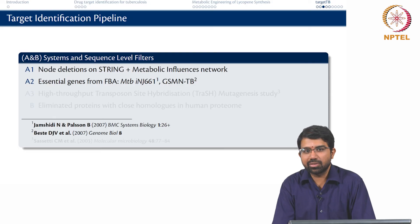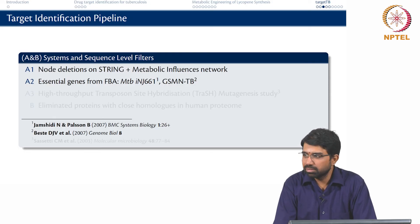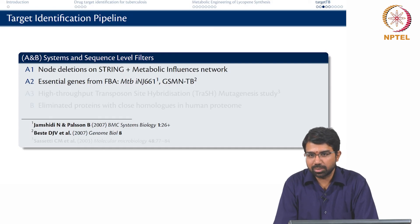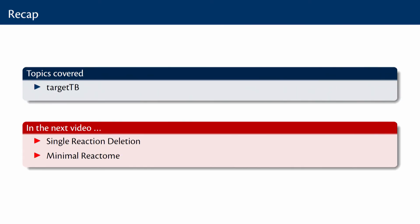With this we are roughly at the end of constraint-based modelling — we have covered a lot of ground. In today's lecture we looked at this target identification pipeline called Target TB, which considers all proteins in tuberculosis and eliminates them systematically based on structural comparisons, sequence comparisons, flux balance analysis, and network analysis. In the next video we will do a lab looking at single gene deletion or single reaction deletion and identifying a minimal set of reactions for organism survival.